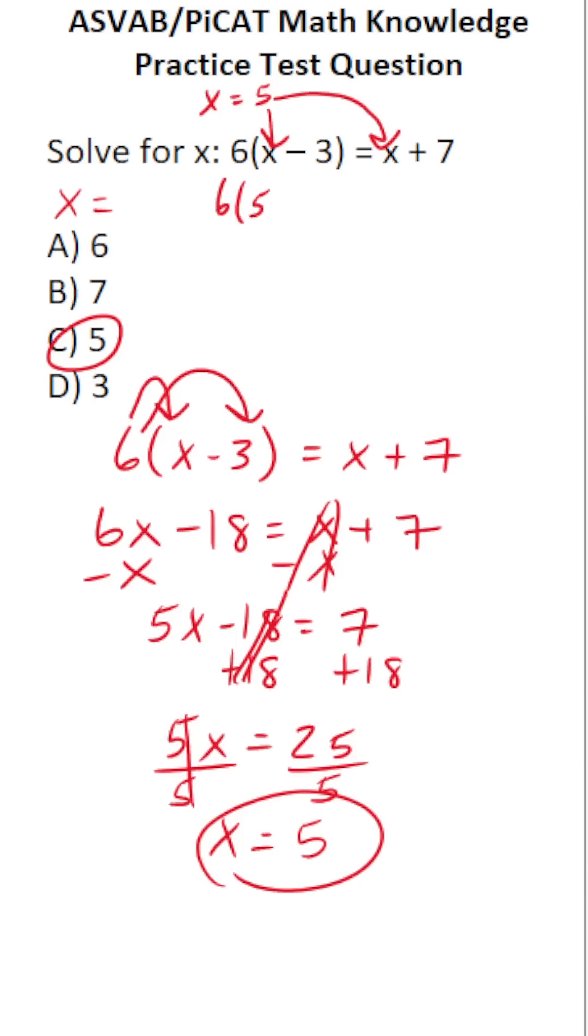So we're going to plug in 5 for x there and there. This says 6 times the quantity 5 minus 3 equals 5 plus 7. 6 times the quantity 5 minus 3 is 6 times 2, which is 12, equals 5 plus 7, which is 12. Does 12 equal 12? Since that is a true statement, we know C is the correct answer.